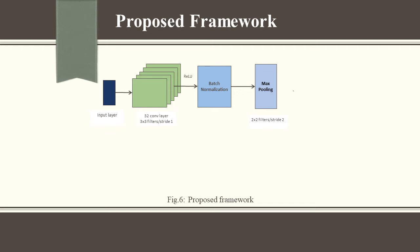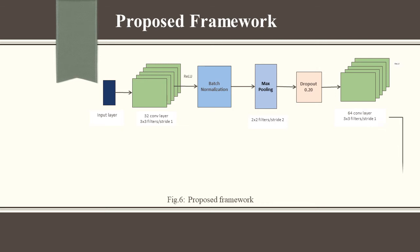On the feature maps, max pooling operation is performed. For dropping neurons, we used a dropout layer to prevent the model from overfitting to the training data. For the first convolutional layer, the dropout value has been set to 0.20. For the second convolutional layer, 64 filters of size 3x3 with each containing 3 channels are used. The same padding is also applied here.